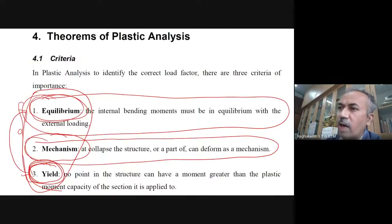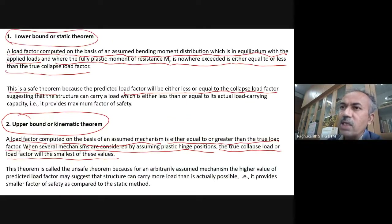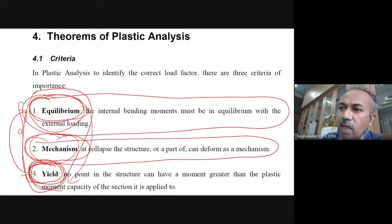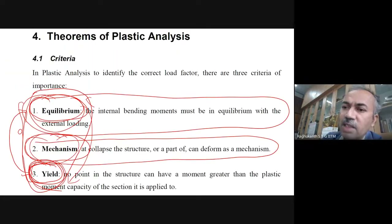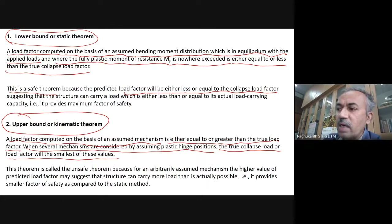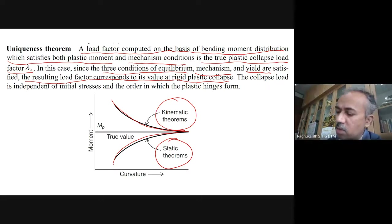All these methods are based on three conditions: equilibrium, mechanism, and yield condition. If they are satisfied, you get your collapse load. We have a static method — a force-based method — linked to equilibrium and yielding, which gives a lower bound. The upper bound is based on mechanism and yield — that is the second theorem. And finally, there is the uniqueness theorem: if all three conditions are satisfied, you get a unique load.